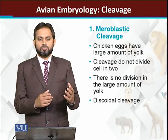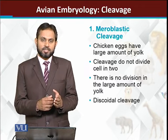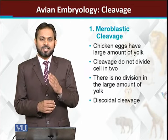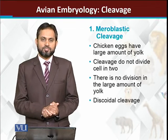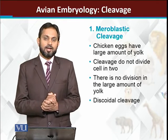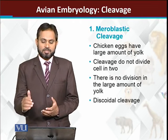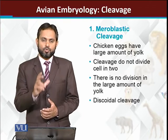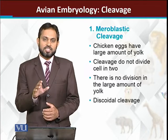Cleavage का जो process है, यह एक खास pattern से होता है, और इसको दो चीज़ें effect करती हैं: number one — amount of yolk, and number two — orientation या arrangement of spindle fibers. Spindle fibers की जो direction होती है, वो decide करती है कि divide कैसे होगा। Cleavage की lines जो हैं, वो subgroups के अंदर same हैं — first, second, third, fourth या fifth तक जो cleavage की line है, वो same है।